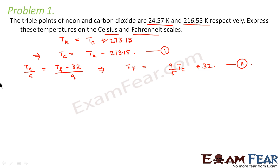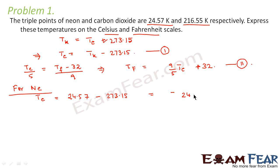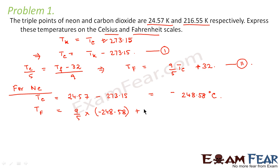So this is the correct equation that we will make use of. For neon, the temperature in Celsius scale would be 24.57 minus 273.15, which comes out to be −248.58 degrees Celsius. Similarly, the temperature in Fahrenheit will be (9/5) × (−248.58) + 32, which comes out to be −415.44 degrees Fahrenheit.